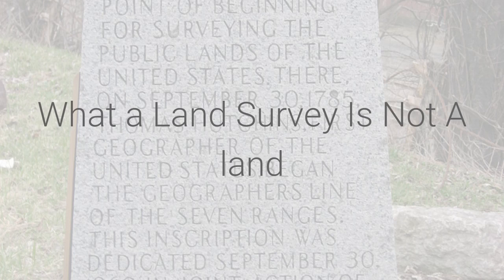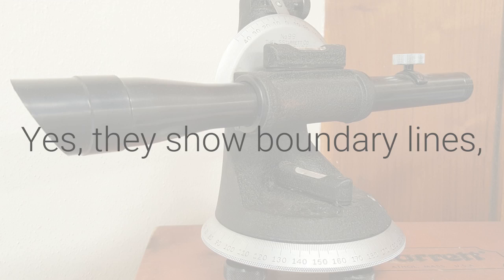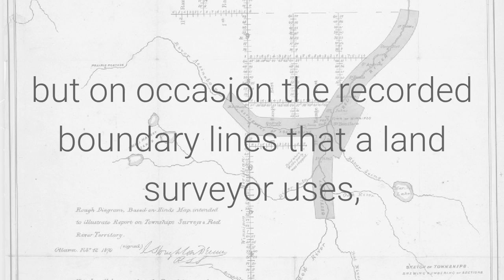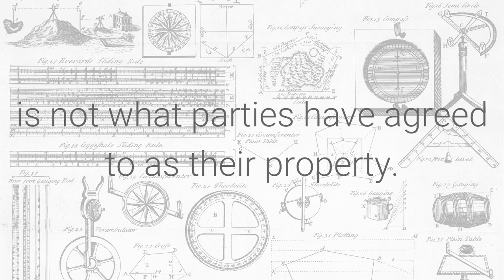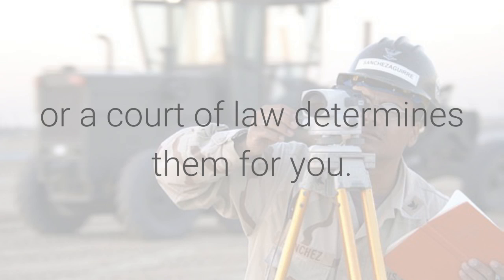A land survey does not always determine actual ownership or possession of a property. Yes, they show boundary lines, but on occasion the recorded boundary lines that a land surveyor uses is not what parties have agreed to as to their property. In these cases, parties meet and either resolve these questions or a court of law determines them.